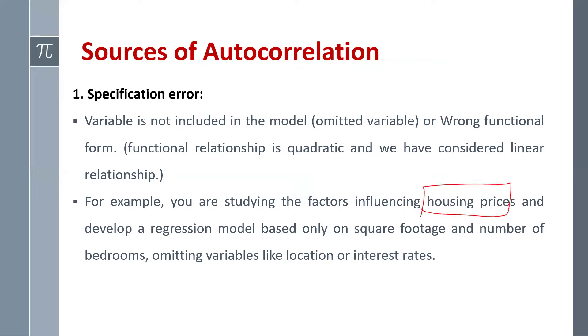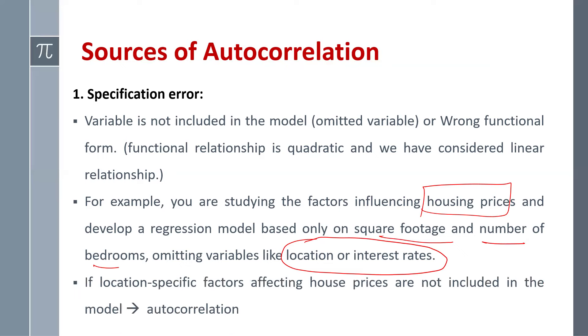And we do not include or we omit variables like location or interest rates, and we only consider square footage and number of bedrooms. Now in this case, if location-specific factors affecting the house prices are not included in the model, then we have the problem of autocorrelation.